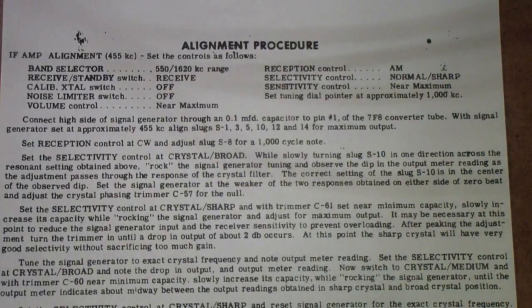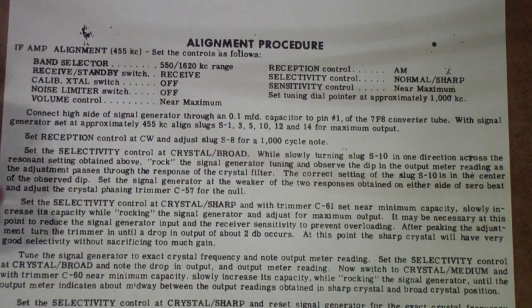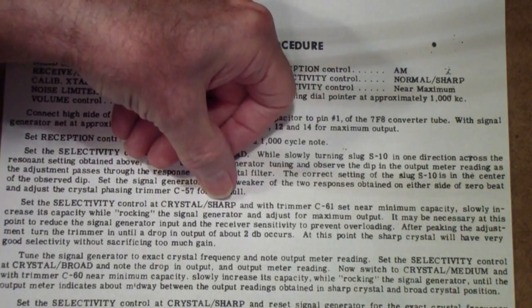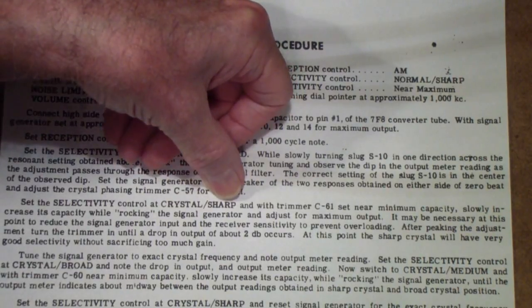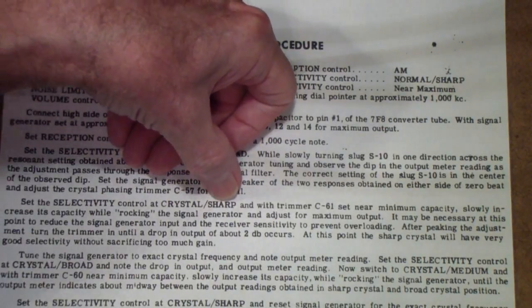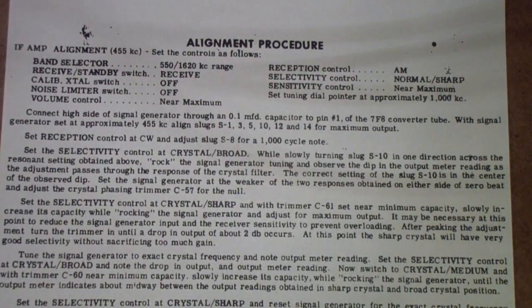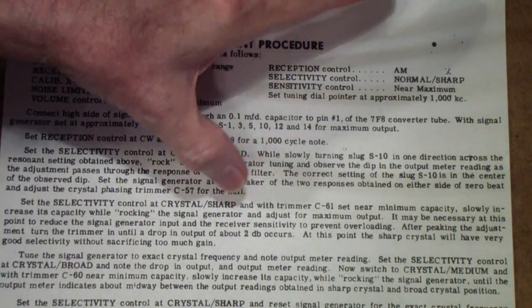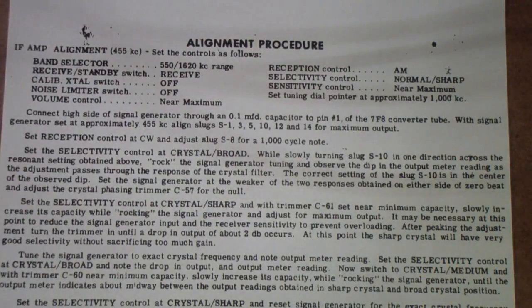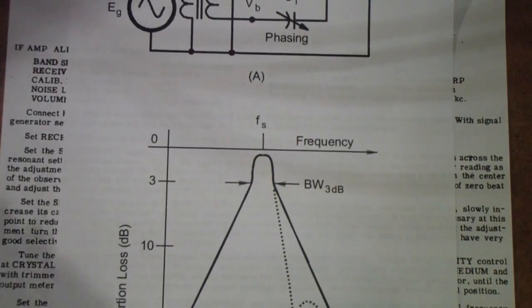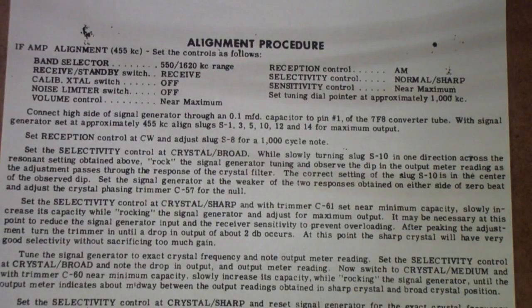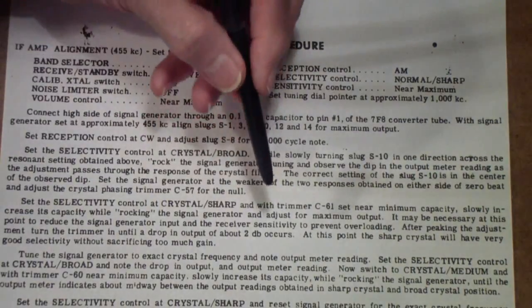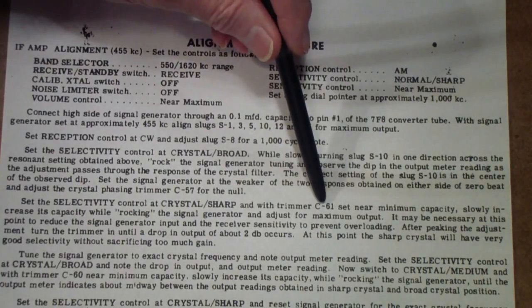then you switch the selectivity control to the crystal sharp position and once again I encourage you if you don't have a frequency generator don't adjust this unless your radio is so far out that it's just useless without it the reason is here you are adjusting around a very narrow frequency range and I'll come back to why that's why it's important you be able to know the generator frequency so then you use trimmer C61